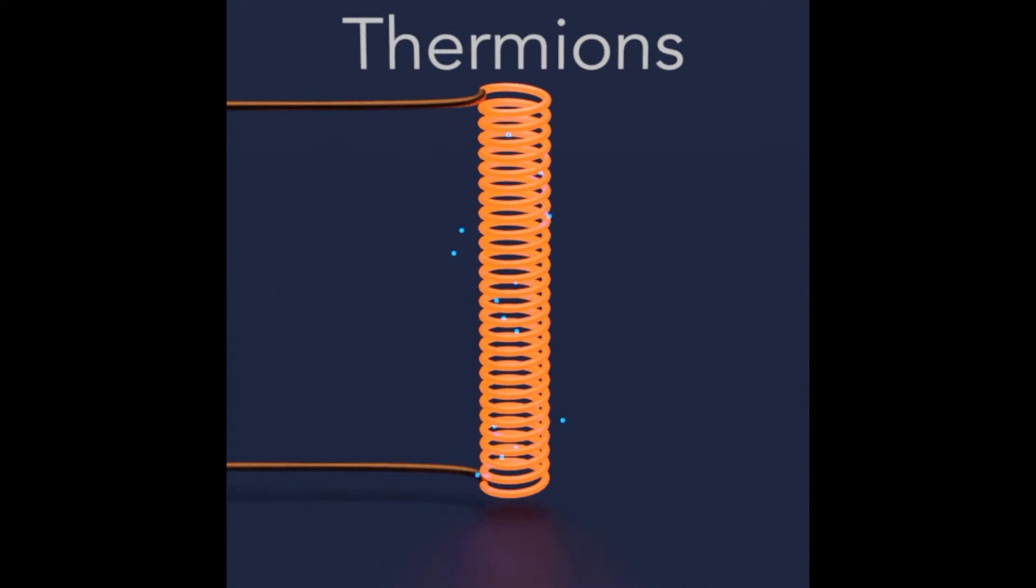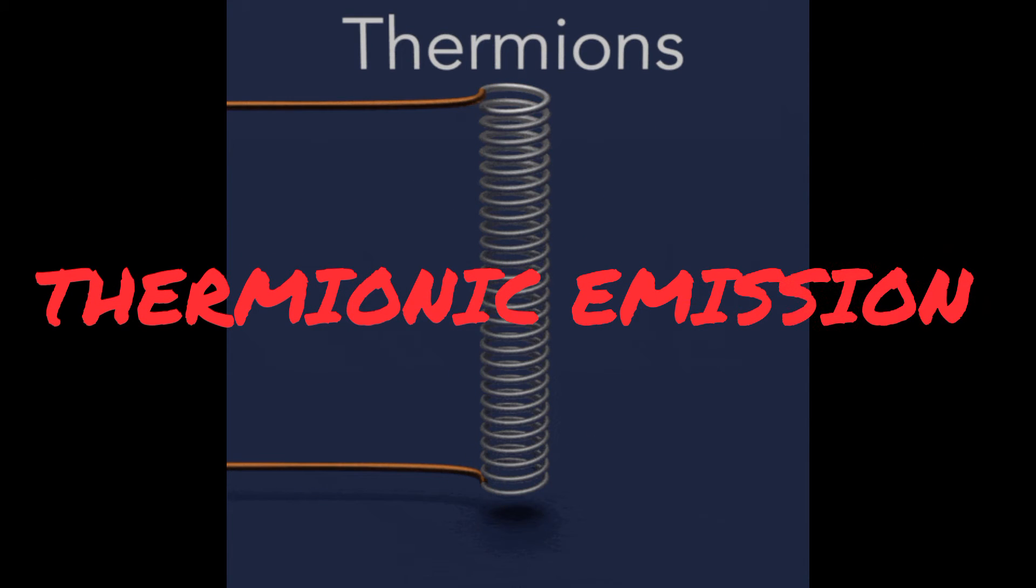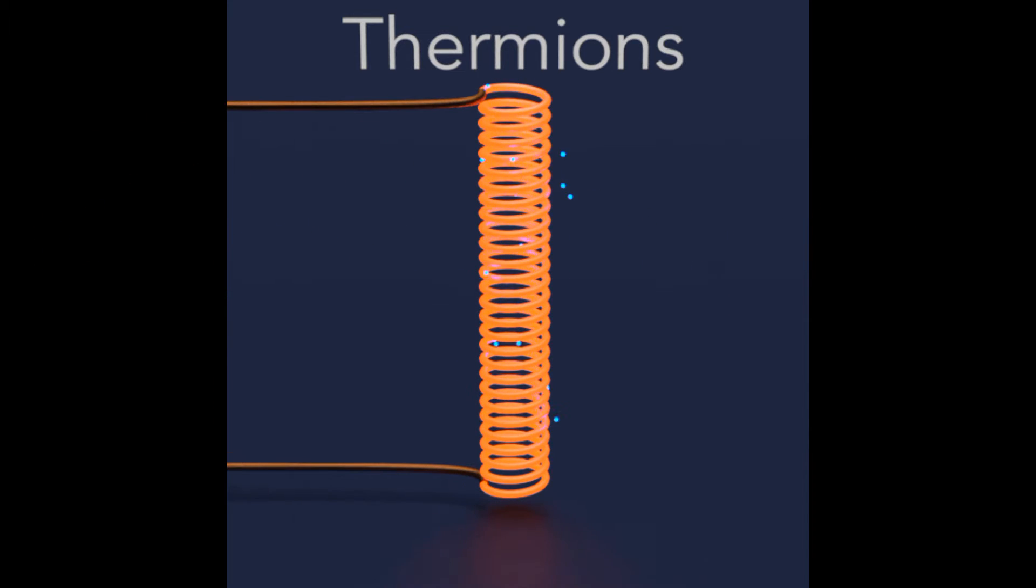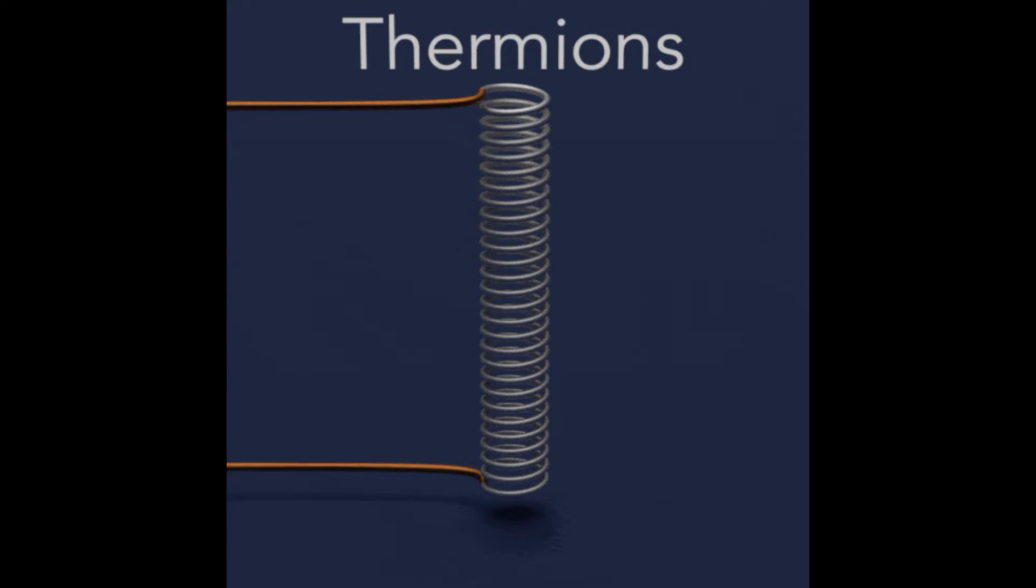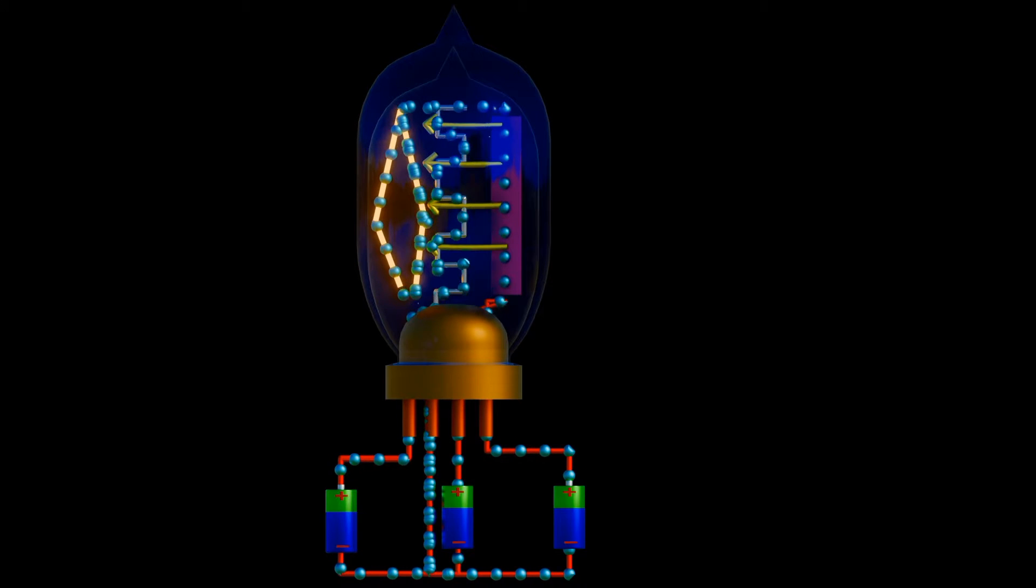The discovery was known as Edison effect, which today is known as thermionic emission because a thermionic material, one which emits electrons when heated, was used in the filaments. The heated filament caused electrons to be emitted and they were collected by the wire.